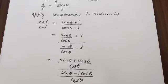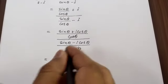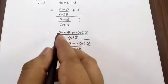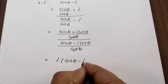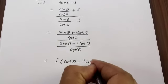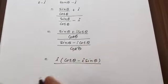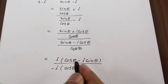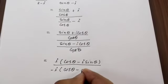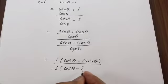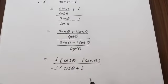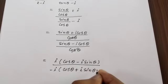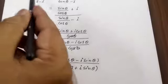The cos θ terms cancel. From the numerator, take i as common factor — i·cos θ comes first, then we have sin θ, and i·i = i² = -1, so minus minus becomes plus. From the denominator, take out -i as common, giving cos θ + i·sin θ in a similar manner. The i factors cancel between numerator and denominator.